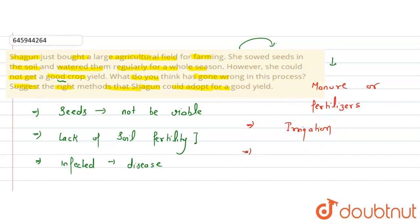Crops should be protected from weeds and animals. Harvesting of crops should be done with the right agricultural tools.